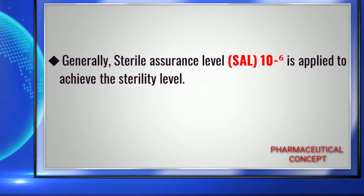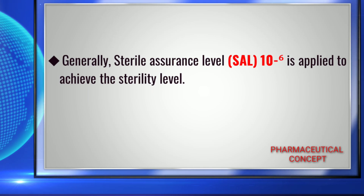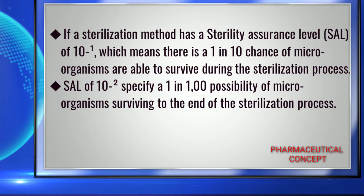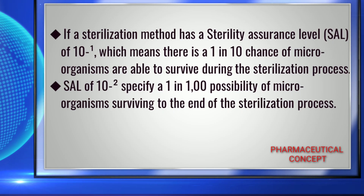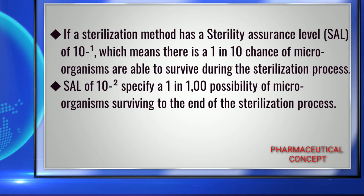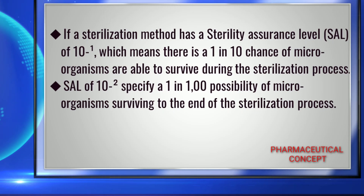Generally, a Sterility Assurance Level of 10 to the power of minus 6 is applied to achieve the required sterility level. If a sterilization method has an SAL of 10 to the power of minus 1, that means there is a 1 in 10 chance of microorganisms surviving the sterilization process. An SAL of 10 to the power of minus 2 specifies a 1 in 100 possibility of microorganisms surviving to the end of the sterilization process.